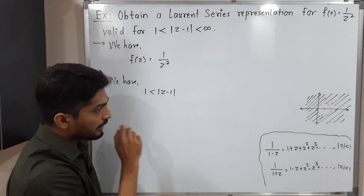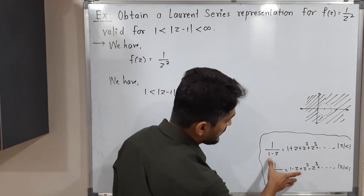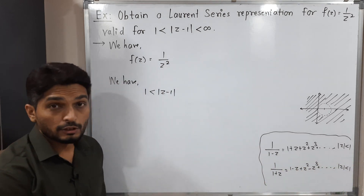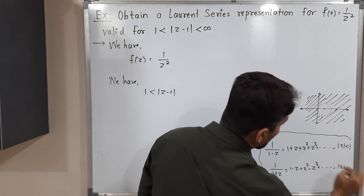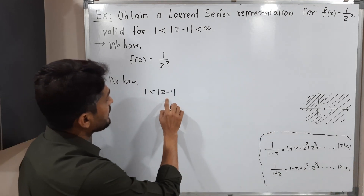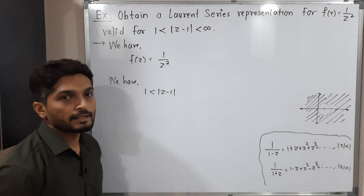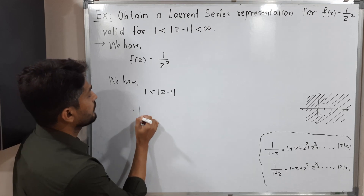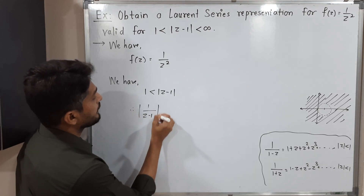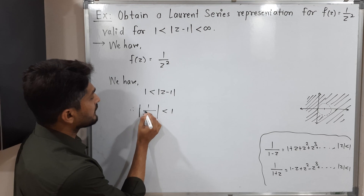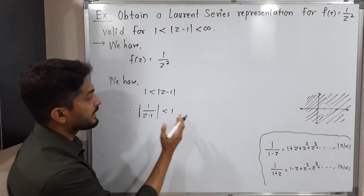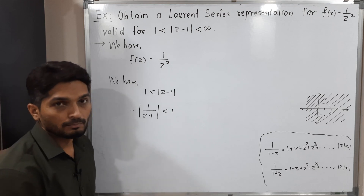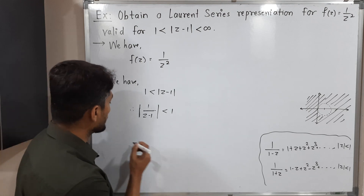To find the Laurent expansion we use those two standard series, but notice their conditions involve |z| < 1 on the right-hand side. Here we have |z - 1| on the right-hand side. So let us shift: from 1 < |z - 1| we get 1/|z - 1| < 1. Now we have a condition similar to the standard ones, with 1/(z - 1) playing the role of z.